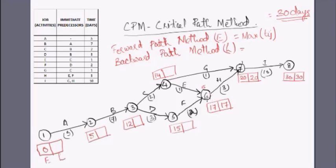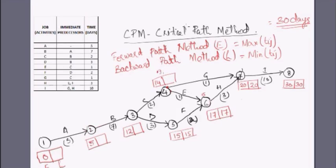Continuing backward, from node 6 to node 4 via activity F: 17 minus 2 equals 15. At node 4 there are two backward arrows. One path gives 20 minus 1 equals 19; another path gives 17 minus 1 equals 16. In the backward pass method we take the minimum of these timings. The minimum of 19 and 16 is 16, so the latest occurrence at node 4 is 16.